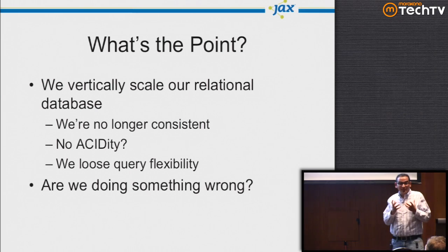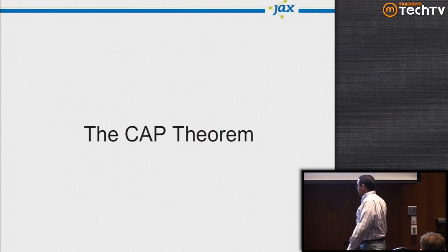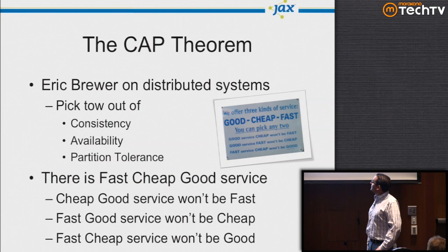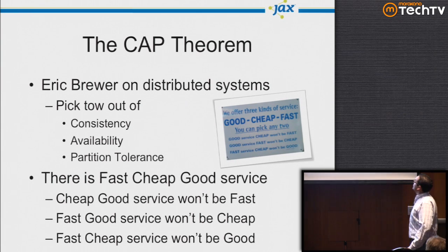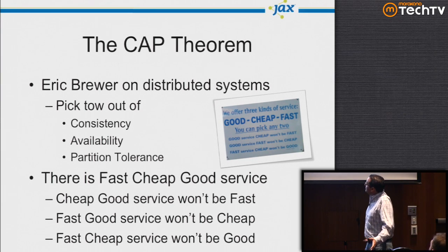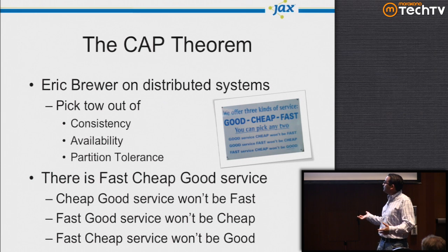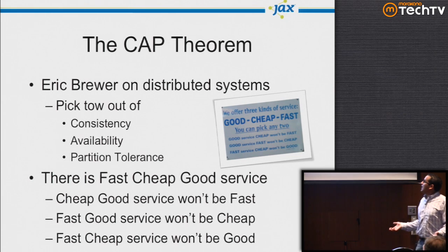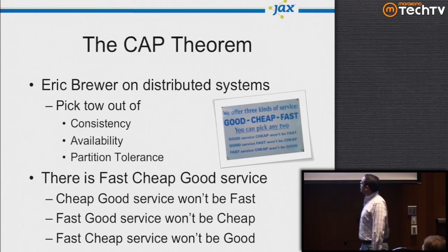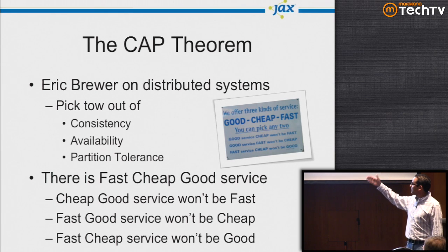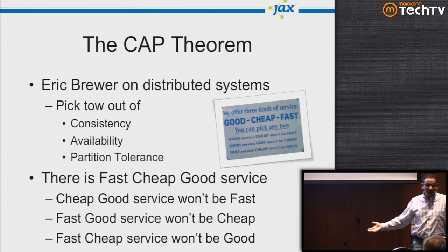So are we doing something wrong? The next thing I want to introduce is the CAP theorem. Introduced by Eric Brewer for distributed systems — not specifically databases — it says: pick two out of Consistency, Availability, and Partition Tolerance. If you are consistent and available, you have no partition tolerance. If you are available and partition-tolerant, you're not consistent. It's similar to 'fast, cheap, good' service — you can only pick two of the three.